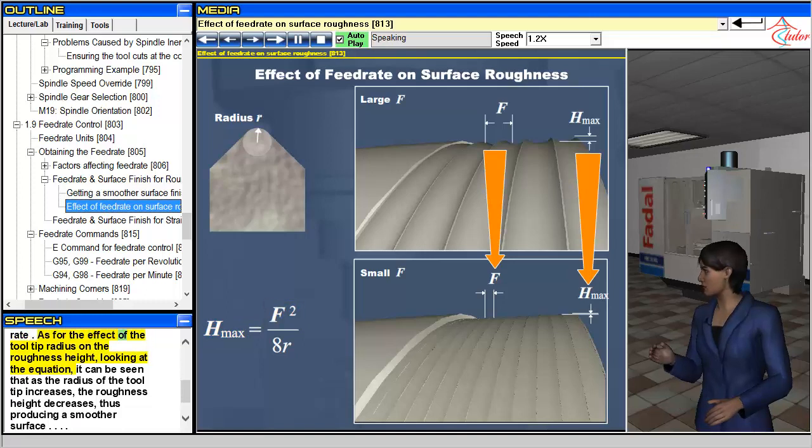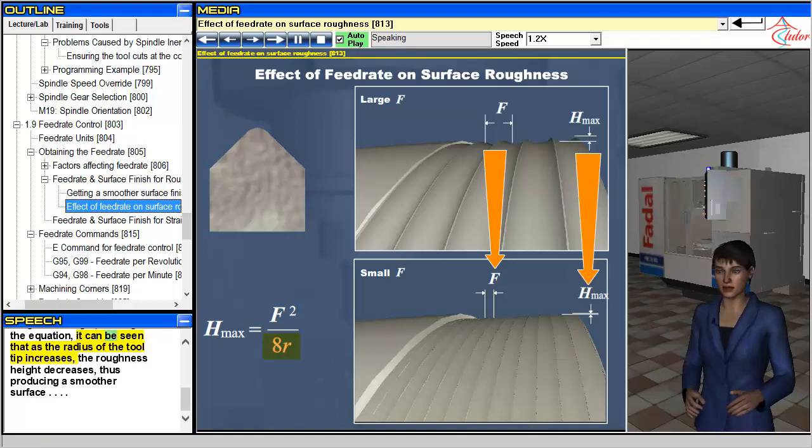As for the effect of the tool tip radius on the roughness height, looking at the equation, it can be seen that as the radius of the tool tip increases, the roughness height decreases, thus producing a smoother surface.